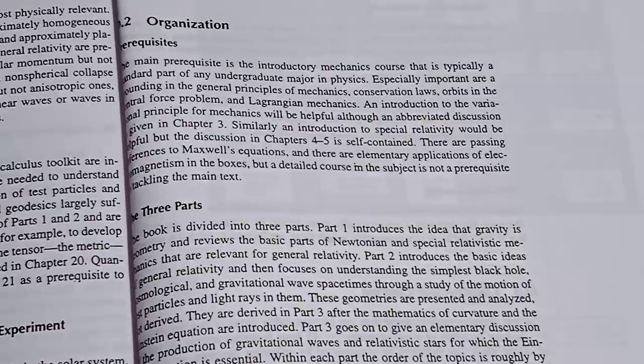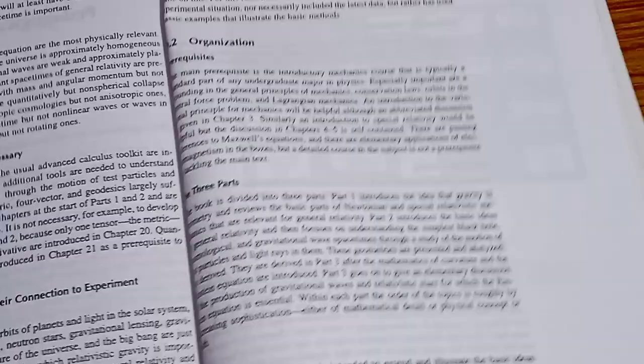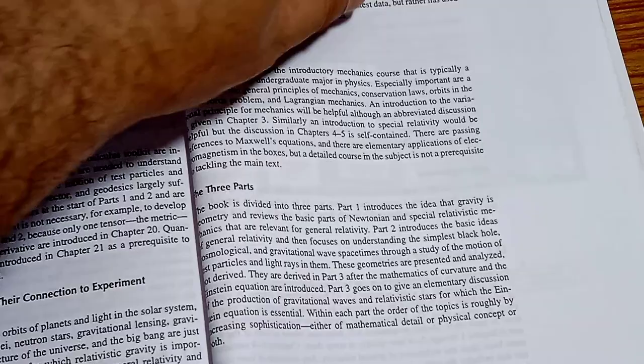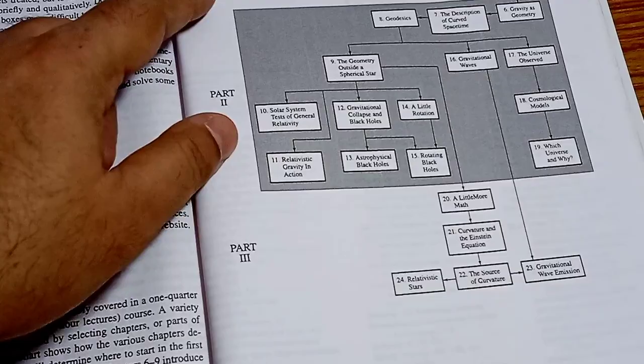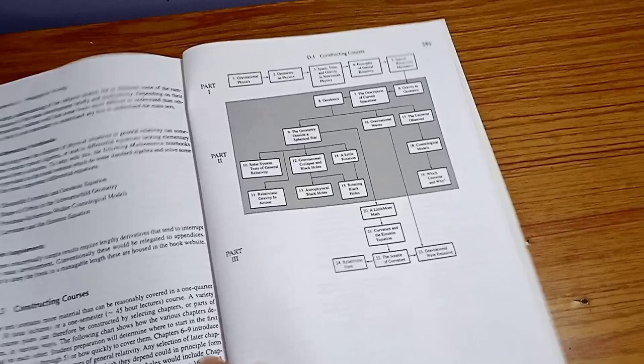One important note before going into this book: it is not for those who have absolutely no idea about mathematics — you really need some prior knowledge. The book then describes boxes, mathematical notebooks, and the overall construction. Part one covers gravitational physics; part two starts with the geometry outside a spherical structure; and then comes part three.